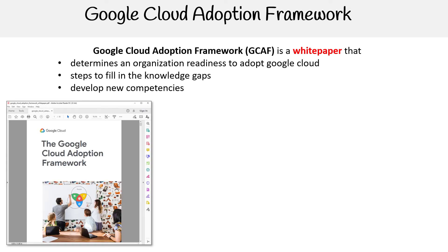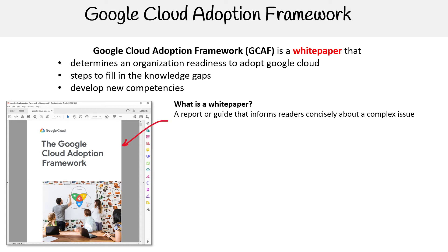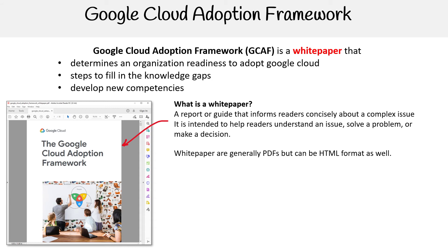To really understand the Google Cloud Adoption Framework, we need to know what a white paper is. It is a report or guide that informs readers concisely about a complex issue. It is intended to help readers understand an issue, solve a problem, or make a decision. White papers are generally in PDF format, but they can also be in HTML format as well.